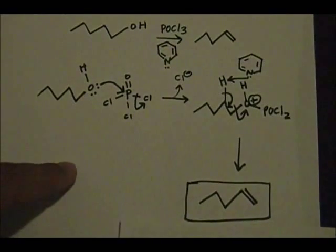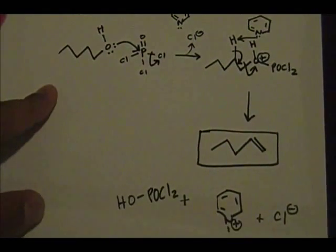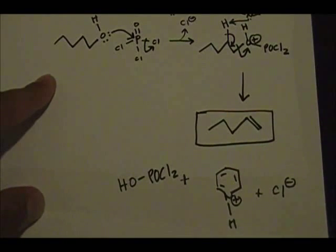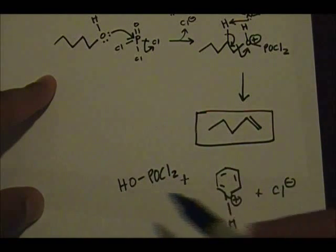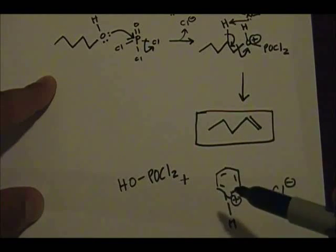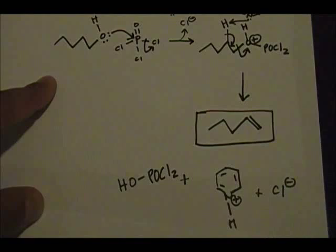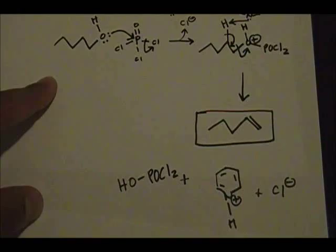The product you yield is your alkene, plus some less significant byproducts: the leaving group (the OPOCl₂ piece), pyridine with the H attached (now with a positive charge on nitrogen), and chlorine with a negative charge.